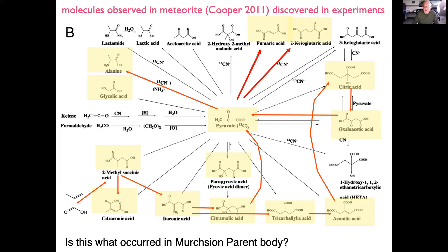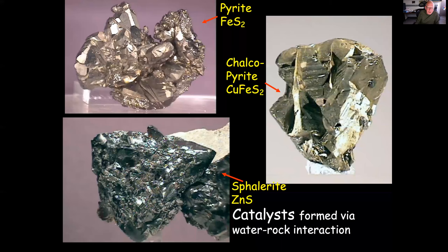Going back to the molecules George Cooper discovered in Murchison and what we've identified in various experiments — we don't see them radiating from pyruvate; rather we connect them through these pathways. Even recently, alpha-ketoglutarate has been shown to be a product obtainable through these routes, and others including Ramanarayanan Krishnamurthy have explored this in much greater detail.